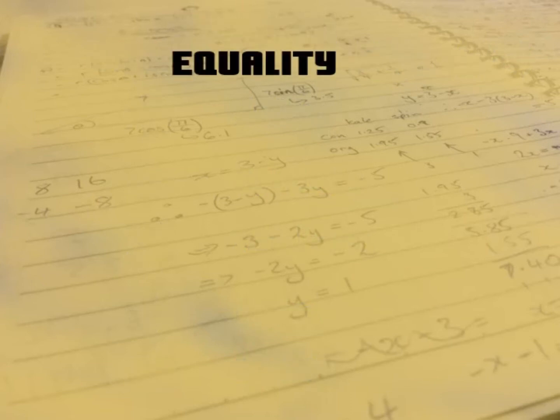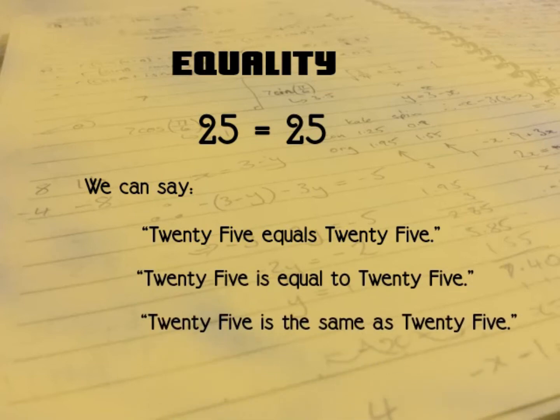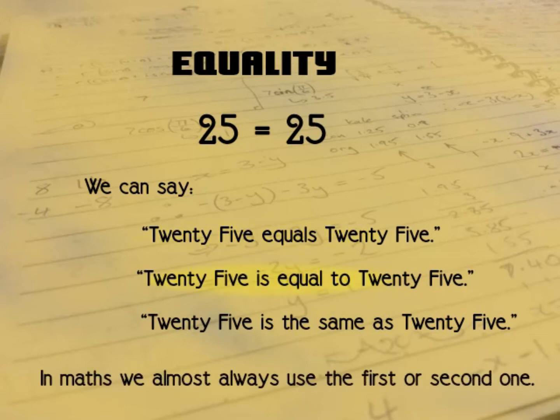So we're going to start with equality, and every equation is built around an equality. There it is, and this is a very simple equation: 25 equals 25. Of course a number equals itself. But we can say different things to describe this equation: 25 equals 25, 25 is equal to 25, and 25 is the same as 25. In maths we almost always use some form of the word equals to describe an equality, which is at the heart of every equation.